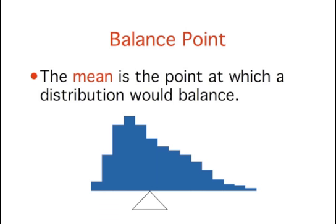The mean is the point on which a distribution would balance. In the figure, the fulcrum, the top of the triangle, is the mean of the distribution.